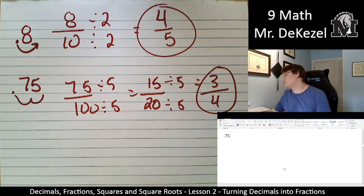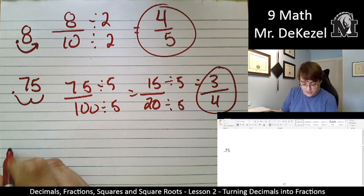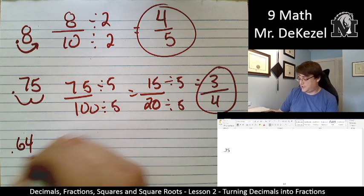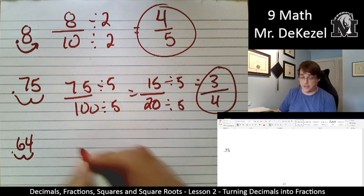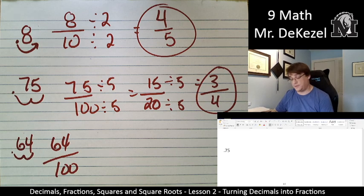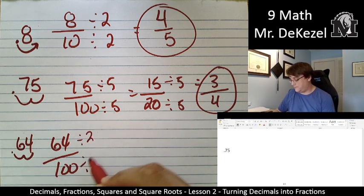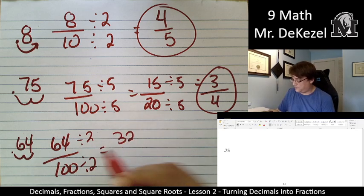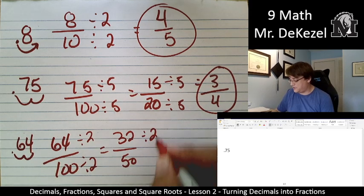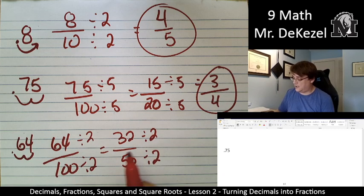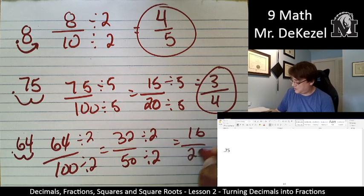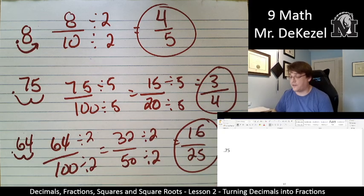Let's do the bonus question. It's going to be 0.64. So 0.64 is going to be turned into something over 100. That's 64 out of 100. Two decimal places. We divide both of them by 2. 64 divided by 2 is 32 and 100 divided by 2 is 50. I can divide both of those by 2 again. 32 divided by 2 is 16 and 50 divided by 2 is 25. And there we go. We have our final answer.